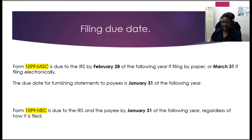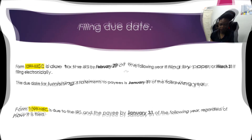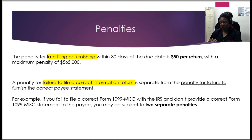The filing due dates: the 1099 Miscellaneous is due by February 28th of the following year if filing by paper, or March 31st if filing electronically — it's still due to the payee by January 31st. The new 1099 NEC is due January 31st, regardless of whether you file by paper or electronically. The penalty for late filing after the 30-day grace period is $50 per return up to $565,000. There's also an additional penalty called failure to file a correct information return, which can be assessed in addition to the late filing penalty — these are two separate penalties — so you definitely want to make sure you're filing the correct form timely.